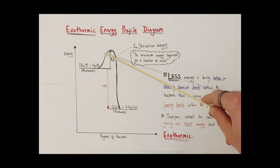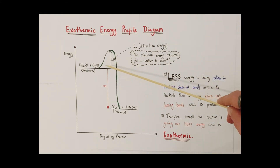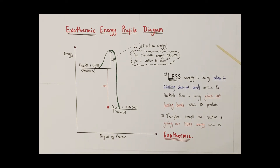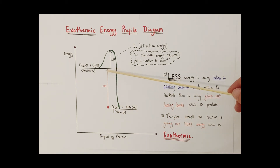The curving line which connects the product and reactant line is known as the energy profile line itself. Note that there's an arrow going to the peak of that curve — that is known as the activation energy. It is the minimum energy required which must be input for the reaction to occur. Those are your four key aspects of an energy profile diagram: reactant line, product line, enthalpy change, and activation energy. The key thing to remember for an exothermic energy profile diagram is that the product line must be at a lower energy position than the reactant line.